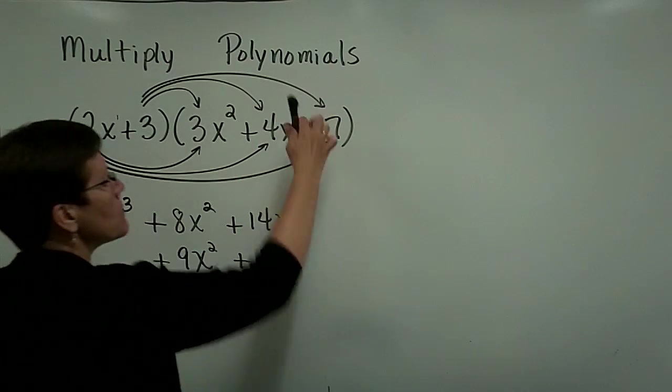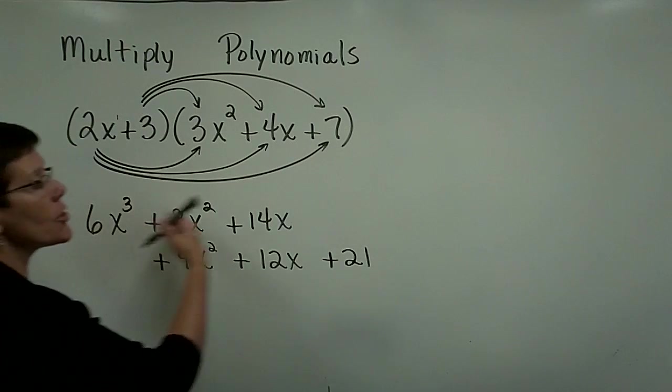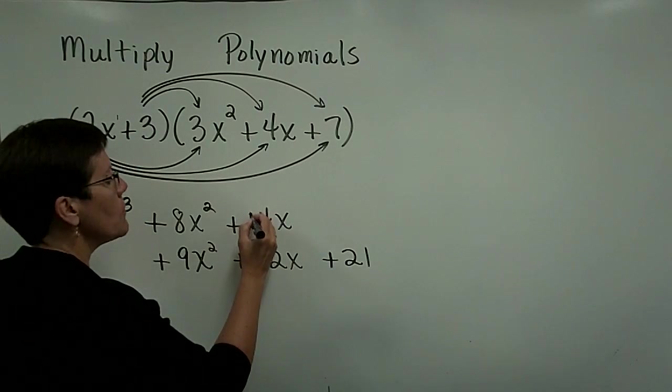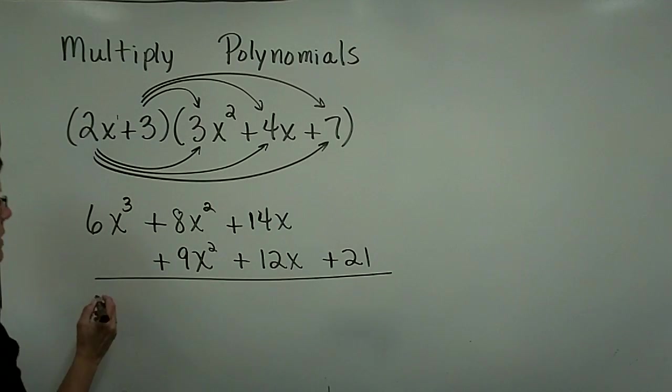And finally, this positive 3 times positive 7 is a positive 21. And there is no term up here that is just a constant, and so I don't need to put it underneath anything, because it's not a like term. So finally,